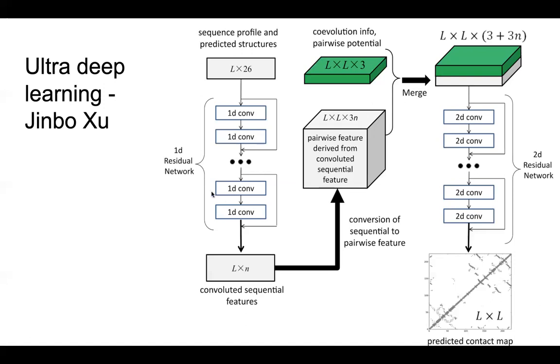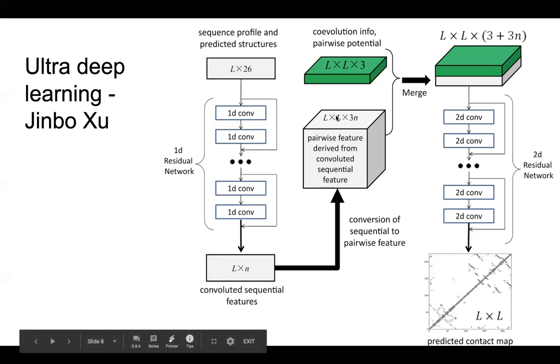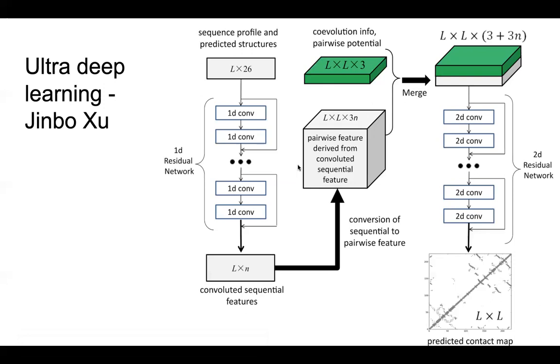And then you use a number of machine learning methods to turn this into convoluted sequential features. And then you can make this into a matrix by just doing a cross-product L by L, so you basically have to see how well do these features coordinate with each other. And then you can add, which is probably the most important part, you add this DCA, this kind of co-evolution and the pairwise potential information, the direct coupling analysis. And then you do another set of convolutions, which is a type of neural networks, and you've got a predicted contact map.